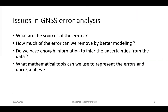The issues we need to deal with in GNSS error analysis are: firstly identifying what the sources of error are, how many of those sources can be removed or mitigated by better modelling, and after that we need to understand if we have enough information to infer realistic uncertainties from the data. We will also talk about the mathematical tools and programs we use to estimate the errors given a certain representative model.